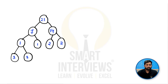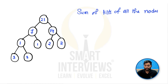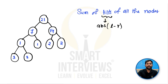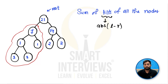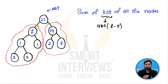Let's understand the problem statement. You are given a binary tree and you will have to find out the sum of tilts of all the nodes. Now what is a tilt? Tilt is the absolute difference between the sum of the left subtree and the sum of the right subtree of a node. If you know the sum of the left subtree and sum of the right subtree, the tilt is the absolute difference between those two values.